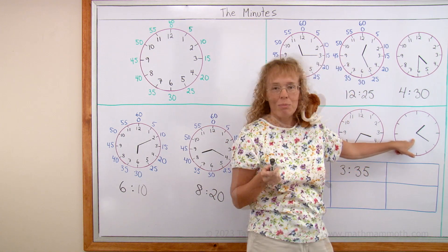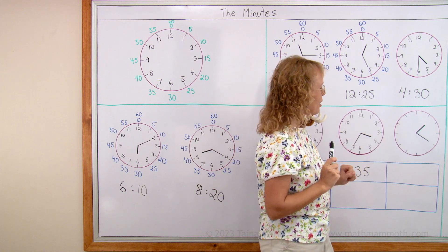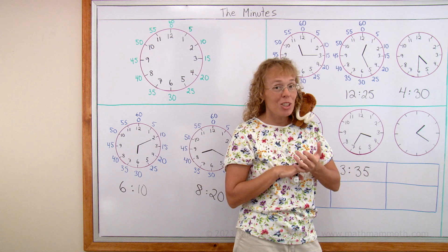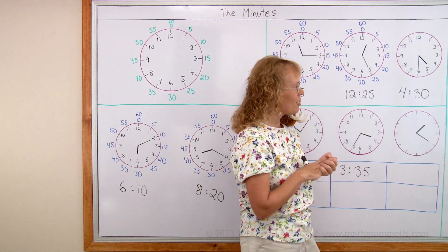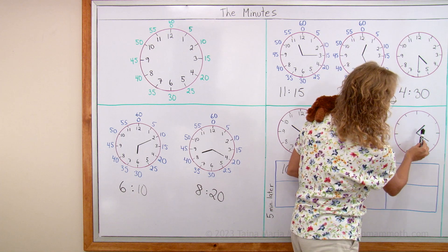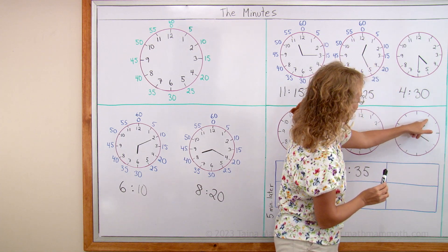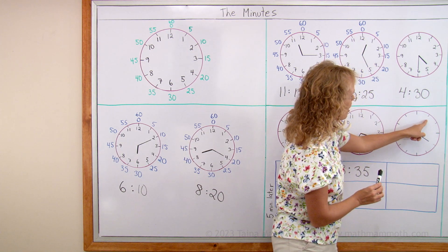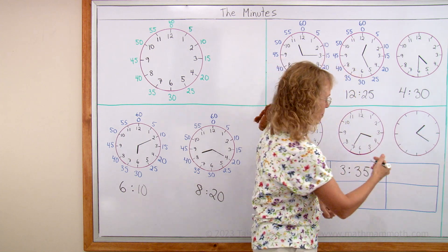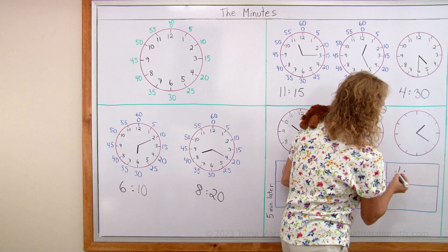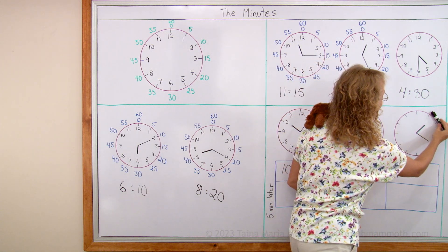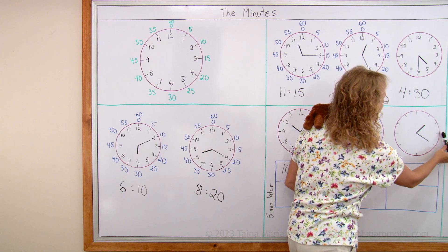And then this one is more challenging yet. Because it does not have the numbers even for the hour hand. And that is pretty normal too. Because there are lots of clocks that do not have any numbers. You just need to know them. The hour hand is the shorter one here. And of course here we would have 1 and 2 and 3. So it is pointing between 1 and 2. It is 1 hour something. And the minute hand. Now we count by 5's. Starting here. 5, 10, 15, 20.